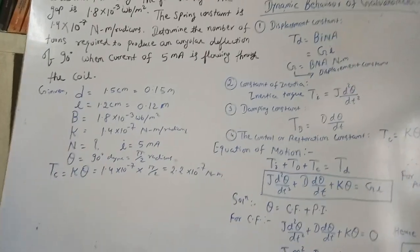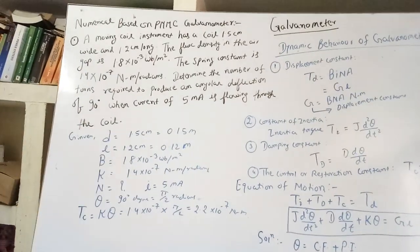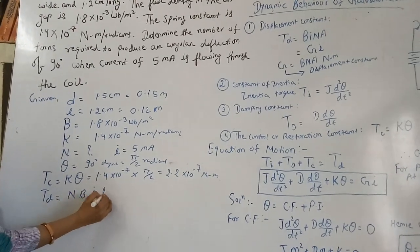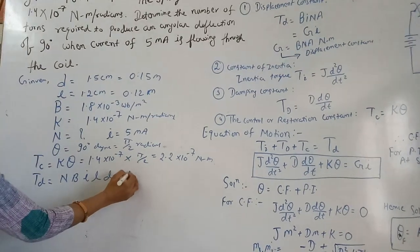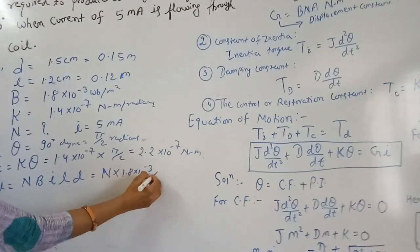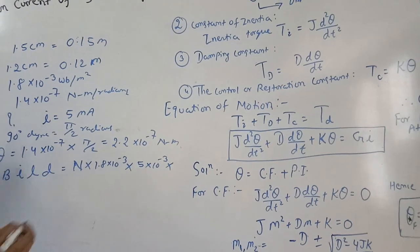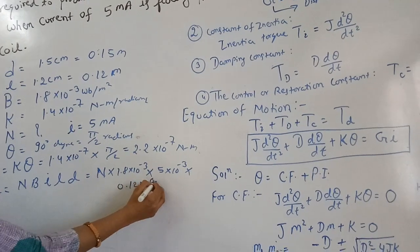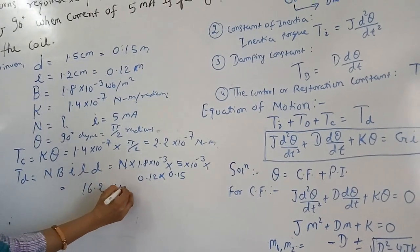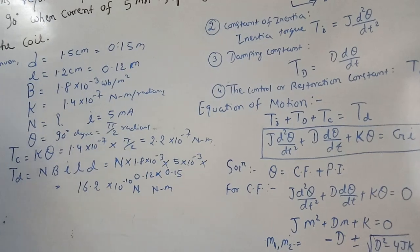We also have B, I, L, and D given. We can calculate the deflecting torque directly as Td = N × B × I × L × D. All values are given; only the number of turns N is unknown. Substituting: 1.8 × 10⁻³ × 5 × 10⁻³ × 0.12 × 0.15, this comes to 16.2 × 10⁻¹⁰ × N Newton meter.